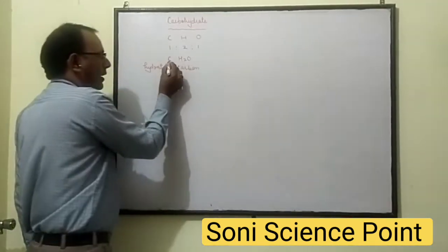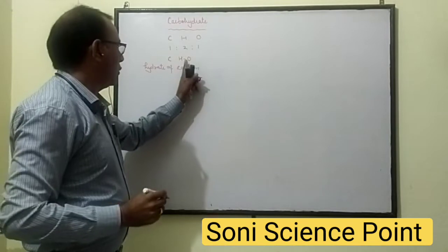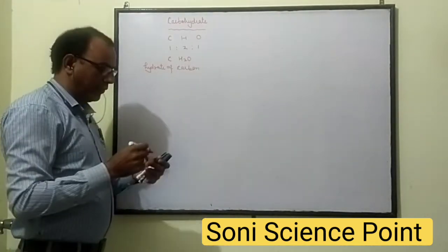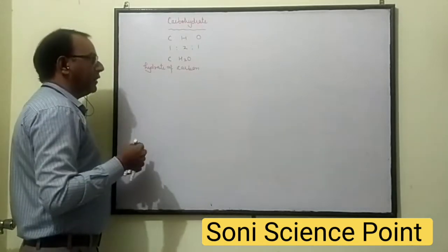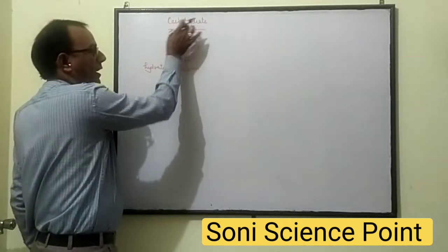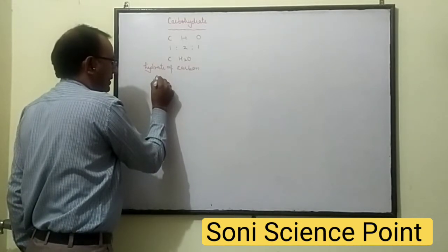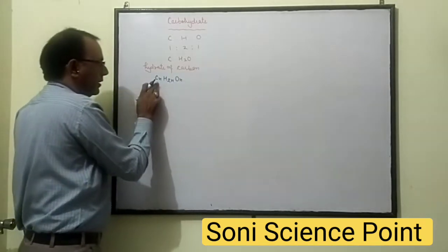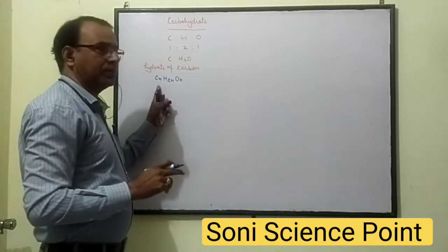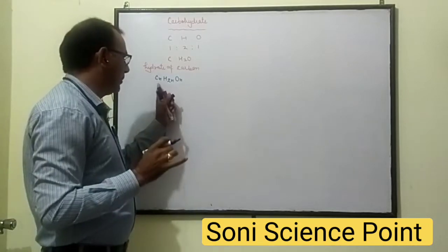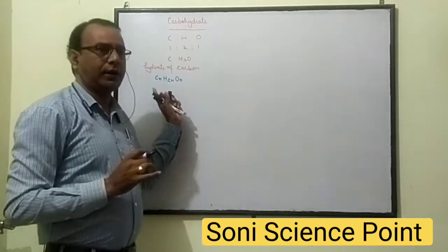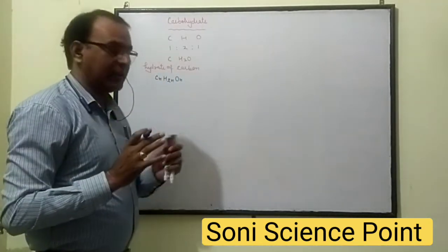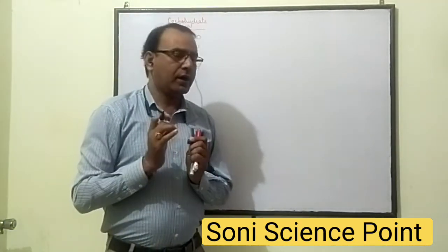Because one carbon molecule is combined with one molecule of water, it is known as Hydrate of Carbon. The chemical formula of Carbohydrate is CNH2NON. It means the number of carbon molecules and number of oxygen molecules are always similar, but the number of hydrogen molecules is double.